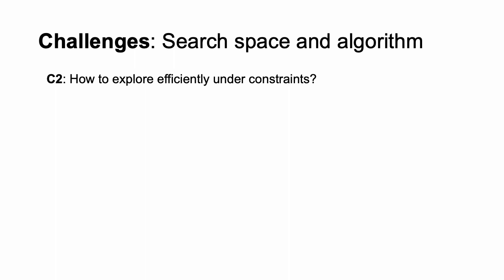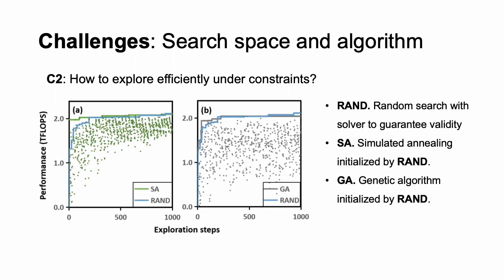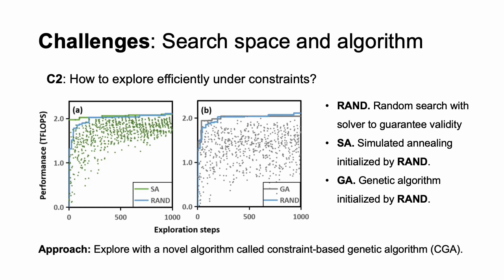Another challenge is how do we explore the irregular search space efficiently? Commonly used search algorithms include simulated annealing and genetic algorithm. Given the irregular search space, we find that these algorithms cannot outperform the random search algorithm. Thus, they are not suitable for our search space. Our approach is to explore the search space with a novel algorithm called constraint-based genetic algorithm.